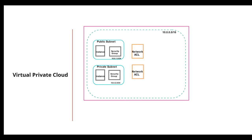While security groups are the firewall for your EC2 instances, network access control lists are the firewall for your VPC subnets — applied at the subnet level. Security groups must be explicitly assigned to an instance. Also, security groups are stateful, meaning changes applied to an incoming rule are automatically applied to the outgoing rule. Network ACLs are stateless — if you allow incoming port 80, you must also explicitly define the outgoing rule for port 80.